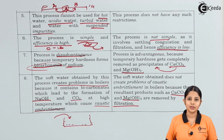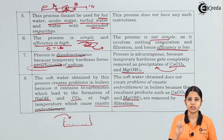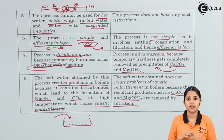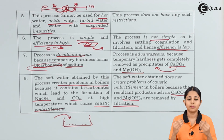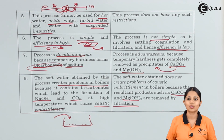In today's session we studied the two most important water softening processes — the zeolite process and the lime soda process — and how they convert permanent hard water into soft water. We compared their advantages, disadvantages, costs, and the way they work. Thank you so much for watching. Stay tuned to eKIDA and subscribe to eKIDA.